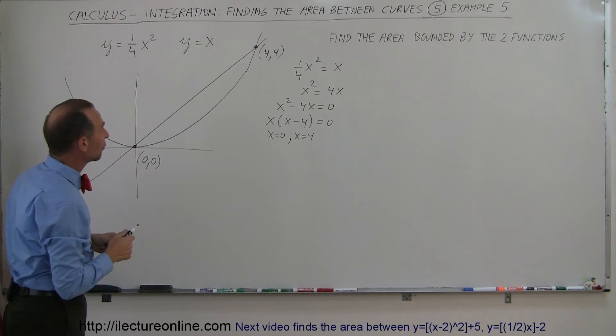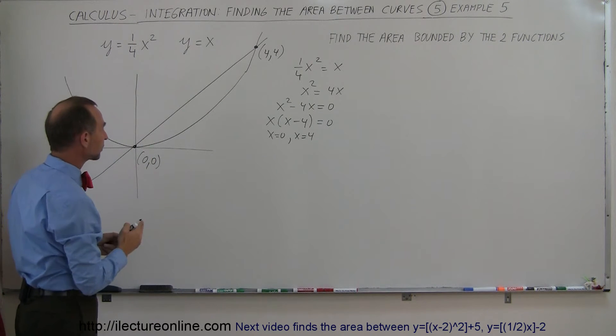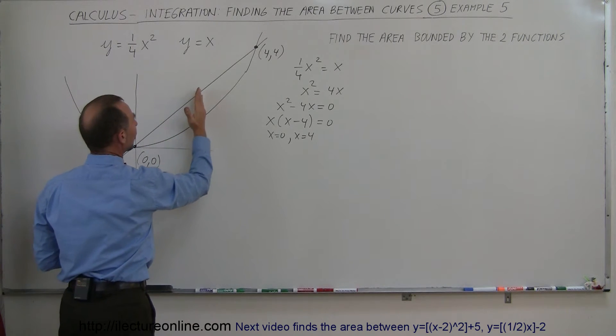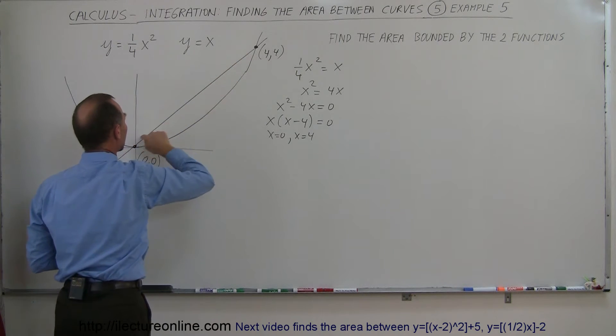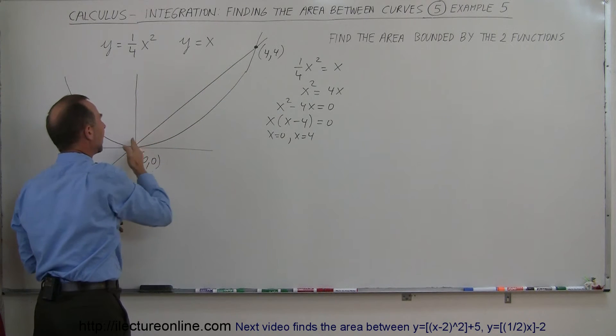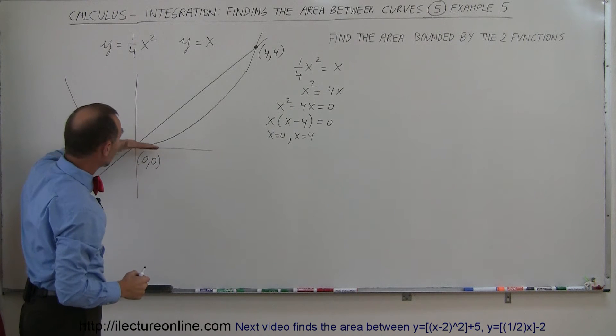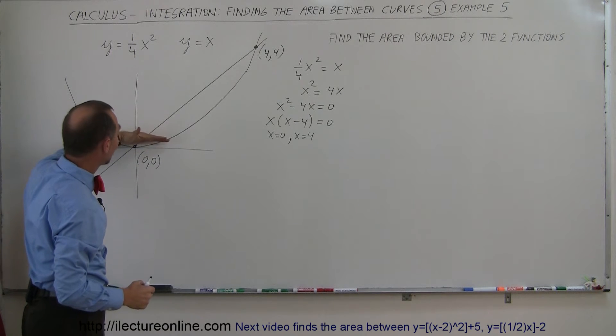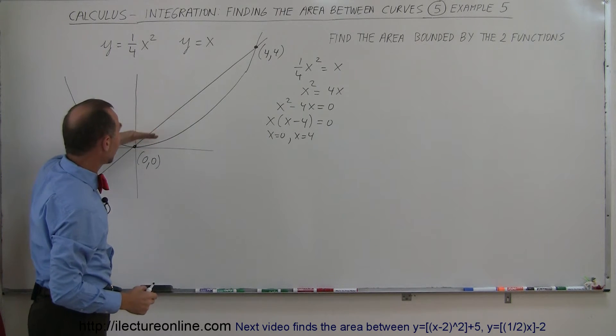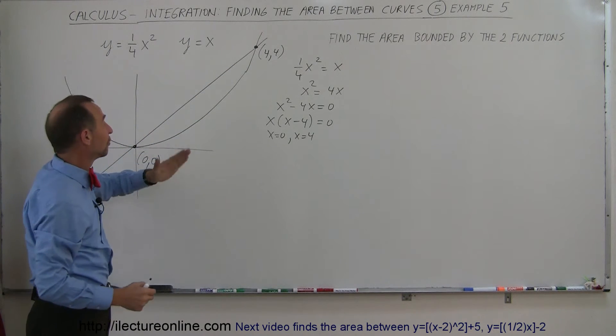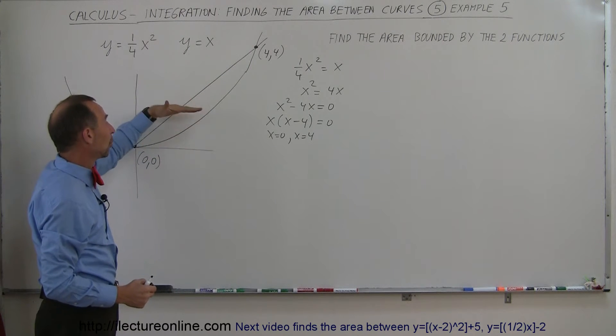Now in this case, notice that if we set up our area element vertically, that works just fine, because we have the top always bounded by the straight line and the bottom always bounded by the parabola. And notice you can also do it sideways, because in every case the left side will be bounded by the line and the right side will be bounded by the parabola. So in this case, it doesn't really matter if your area element is vertical or horizontal.